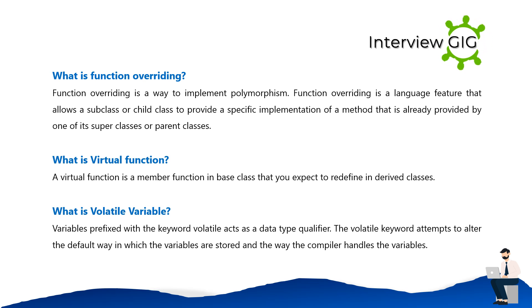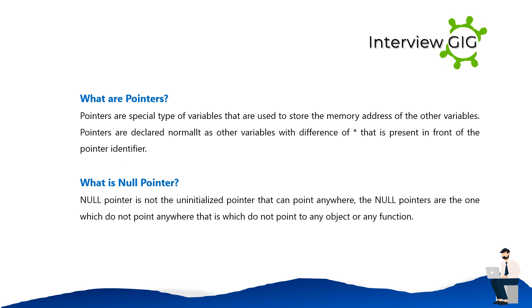What is a volatile variable? Variables prefixed with the keyword volatile act as a data type qualifier. The volatile keyword attempts to alter the default way in which the variables are stored and the way the compiler handles the variables. What are pointers? Pointers are a special type of variable used to store the memory address of other variables. Pointers are declared like normal variables, with the difference of an asterisk (*) present in front of the pointer identifier.